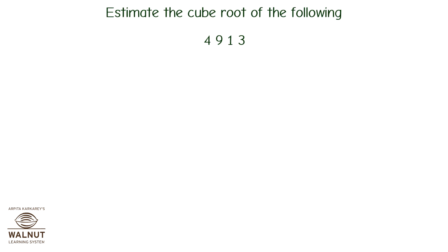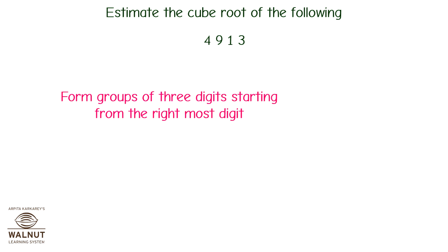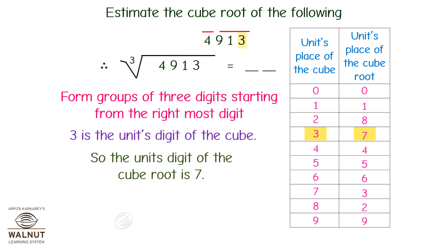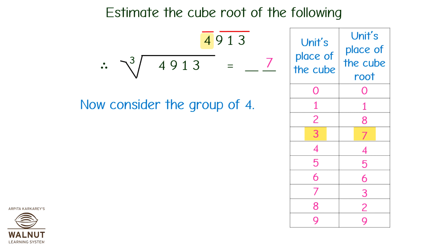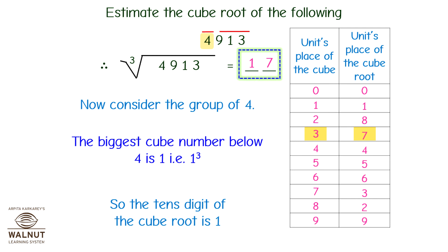Estimate the cube root of 4,913. The number is odd, so the cube root is also odd. Form groups of three digits starting from the rightmost digit. 3 is the unit's digit of the cube, so the unit's digit of the cube root is 7. Therefore, the cube root of 4913 is _7. Now consider the group of 4. The biggest cube number below 4 is 1, i.e., 1 cubed. So the tens digit of the cube root is 1. Therefore, the cube root of 4913 is 17.